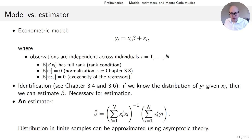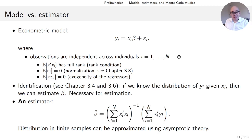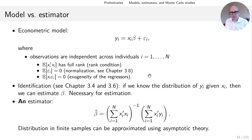The usual assumptions in the simplest possible case for OLS: observations are independent across individuals and the epsilons are identically distributed for each individual. The key assumptions for OLS to work are the three bullet points here.